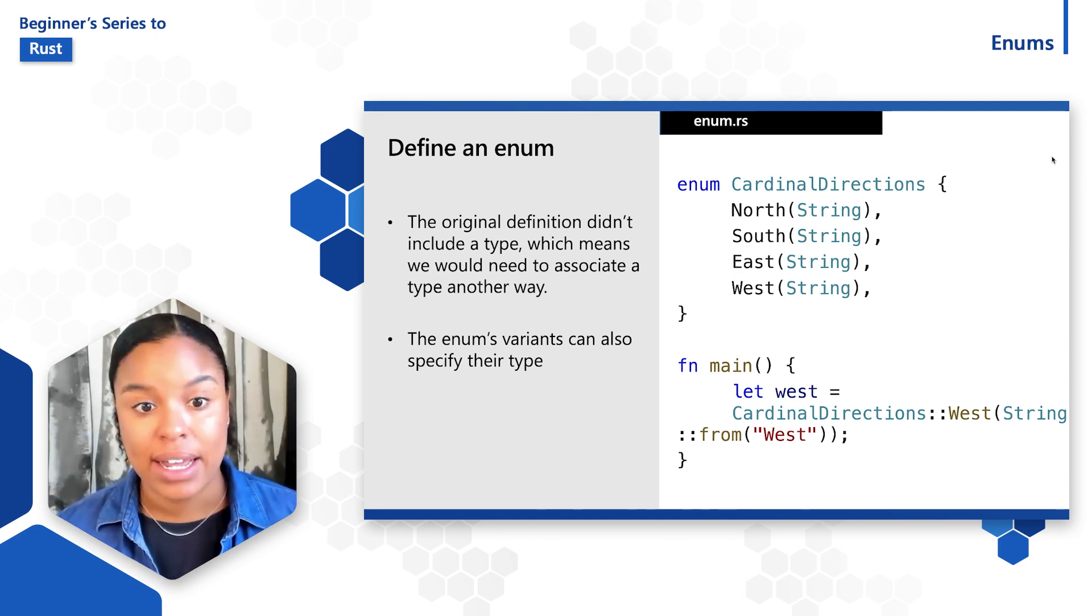And then down in the main function, I can define a variable called west to access that west variant directly from the enum. So here what I'm doing is attaching a data type to each variant of the enum directly. So there's no need for any kind of extra step to be done, like a struct to define the type.